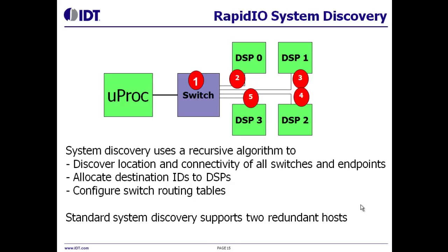This chart gives some information about the RapidIO system discovery algorithm. It's a very simple recursive algorithm where, for example, the microprocessor first determines that it's connected to a switch. Using standard registers, it checks each switch port to determine what that switch port is connected to. Device IDs are allocated to the devices that are connected and the switch routing tables are updated. Note that at this point the memory map of the system does not need to be determined, because RapidIO routes packets based on device ID and not on address. This allows RapidIO to support any system topology.